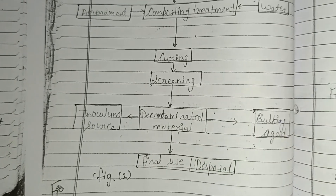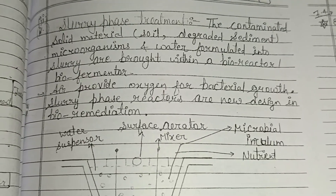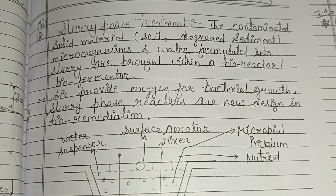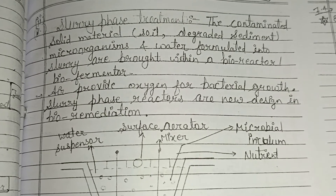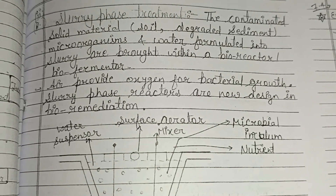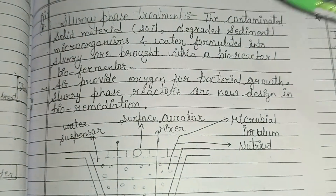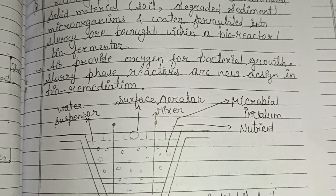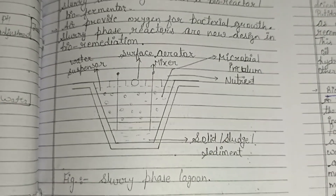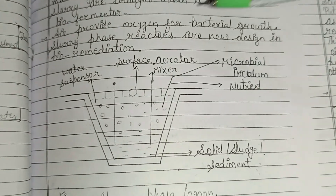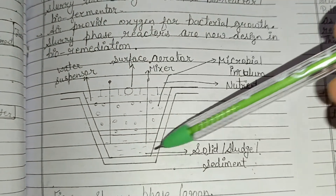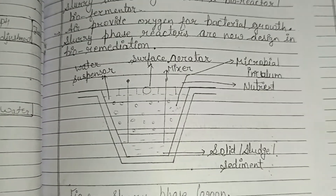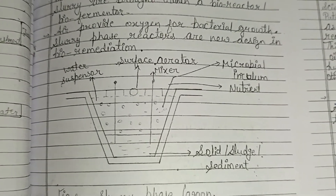The decontaminated material can also serve as an inoculum source for the next composting cycle, and the final product is prepared for use or disposal. For slurry phase treatment, the contaminated solid material — soil or degraded sediment — is formulated with microorganisms and water into a slurry within a bioreactor or biofermentor. Air provides oxygen for bacterial growth. In a slurry phase lagoon, a surface aerator mixes the solid-sludge-sediment mixture, and microbial inoculum and nutrients are added.